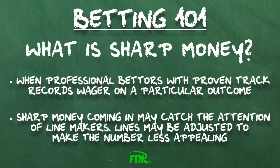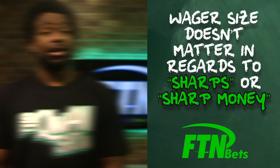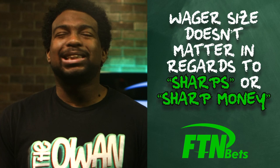Sharp money is when professional bettors with proven track records wager on a particular outcome. These bettors are sometimes known as sharps and may be part of a bigger betting syndicate. Sharp money coming in typically catches the attention of linemakers, and you often see lines adjusted in the direction of those sharp bets to make the number less appealing. These are often large bets, but wager size isn't what makes a bettor sharp — the skillfulness and track record of the bettor is what makes his or her bets sharp money.